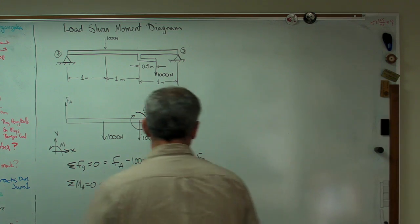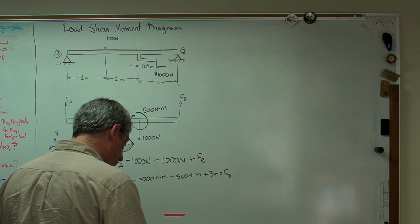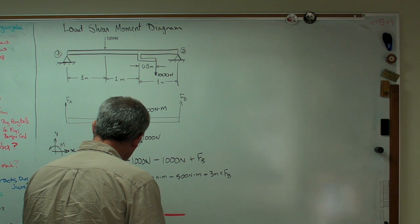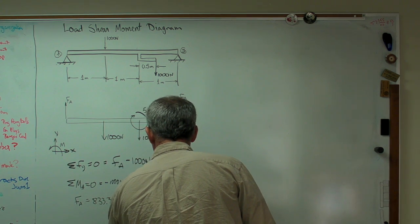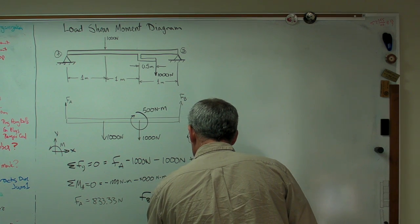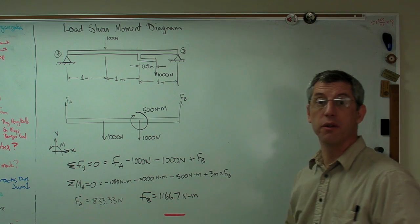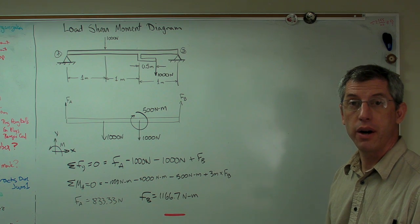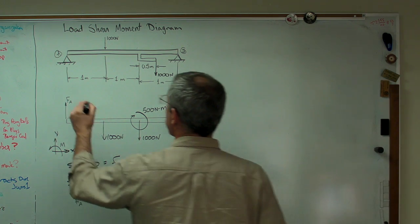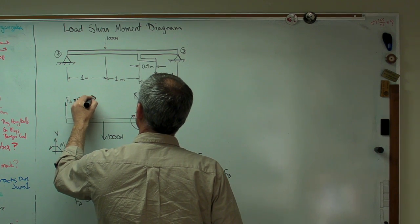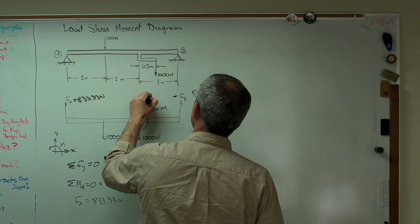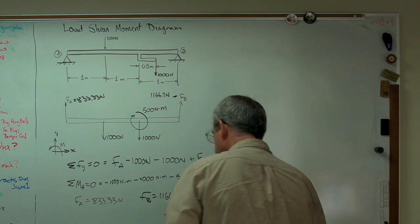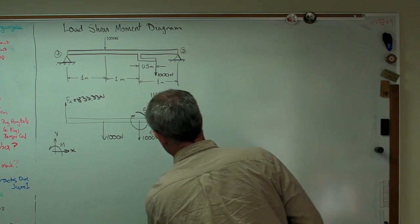I'm running short on time here, so I'm just going to write this out. FA equals 833.33 newtons, and FB equals 1166.7 newtons. I'm writing these to five significant figures. So all we've got to do now is draw our load shear moment diagram. I'm going to erase this stuff here to make some room for myself.